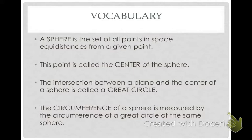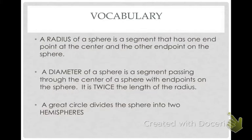The point that they're equidistant from is called the center of the sphere. The intersection between a plane and the center of a sphere is called a great circle. And the circumference of a sphere is measured by the circumference of a great circle in that sphere.